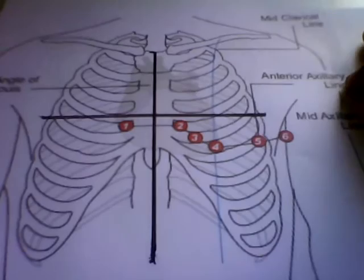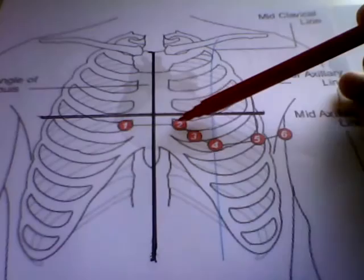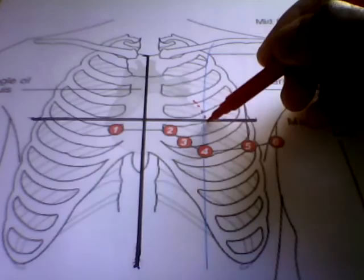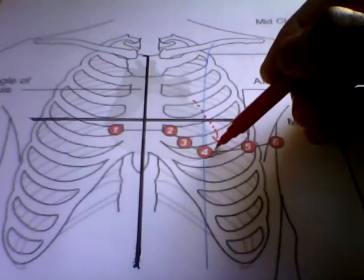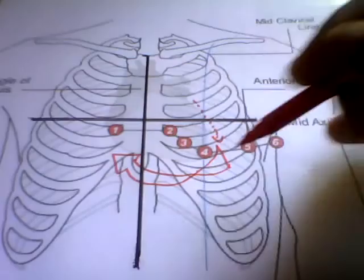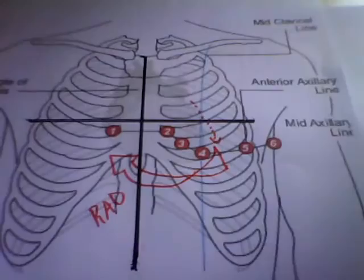So now let's look at the leads that we use in order to assess bundle branch block, right bundle branch block to be specific. So we've got this diagram here with the precordial leads or the chest leads - we've got lead V1, V2, 3, 4, 5, and 6. And I've just drawn the plane there for our axis. So remember we said that we get normal left ventricular activation and then we get a shift in axis later on where vector 3 is now shifted to the right hand side, so we get a right axis deviation.